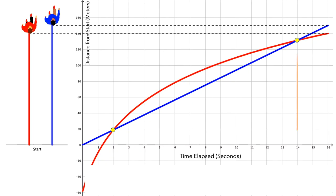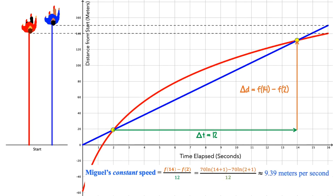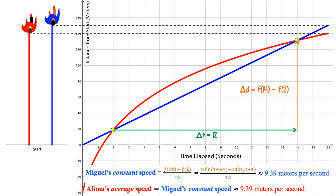To do this, we need to know Miguel's change in distance traveled and the corresponding change in time. Since Miguel and Alema's distances were the same at the start and end of this time interval, we can use Alema's distances to compute the change in distance. So we know that Miguel ran f of 14 minus f of 2 meters over the 12-second interval. We compute Miguel's constant speed by dividing this distance by the time, which gives 9.39 meters per second. Alema's average speed over this interval is therefore also 9.39 meters per second.